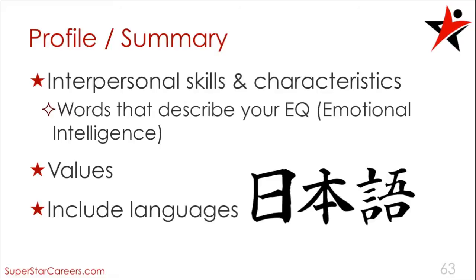One mistake that job seekers make is making the summary section focus exclusively on their technical skills. However, employers want people who are highly skilled and who get along well with others, so it's important to also include some of your interpersonal skills. In your workbook, look at the personal characteristics section and circle words that describe you and your personality at work. You may have a great sense of humor, but unless you're applying for a job as a comedian, that probably shouldn't be included in your profile. You can, however, include words like enthusiastic, creative, energetic, inquisitive, and personable. Go back through the list and circle your top three — those are the traits that you should include in your profile.